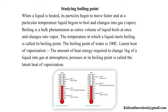The temperature at which a liquid starts boiling is called its boiling point. The boiling point of water is 100 degrees Celsius. Latent heat of vaporization: the amount of heat energy required to change 1 kg of a liquid into gas at atmospheric pressure at its boiling point is called the latent heat of vaporization.